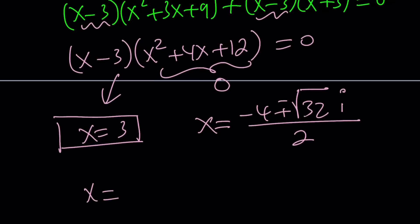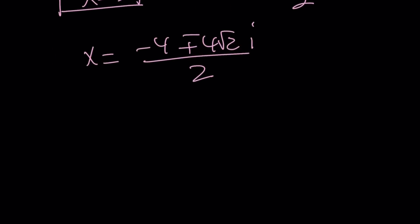Square root of 32 is 4 root 2. So we can write the x as negative 4 plus minus 4 root 2i divided by 2. And everything is divisible by 2, so we can write this as negative 2 plus minus 2 root 2i. Since this is a cubic equation, there will be a total of three solutions, two of which are non-real complex, and they are conjugates.